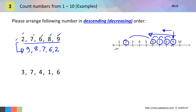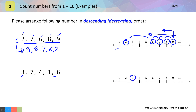Let us take one more example and repeat the process. First we need to highlight all the numbers on the number line: three, seven, four, one, and six.